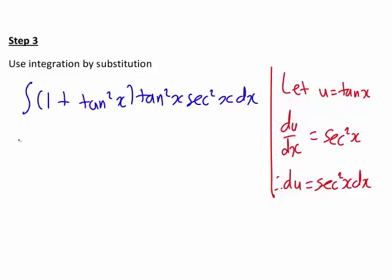The first part, 1 plus tan squared x, just becomes 1 plus u squared. Another tan squared x here will also be u squared, and the sec squared x dx is du.